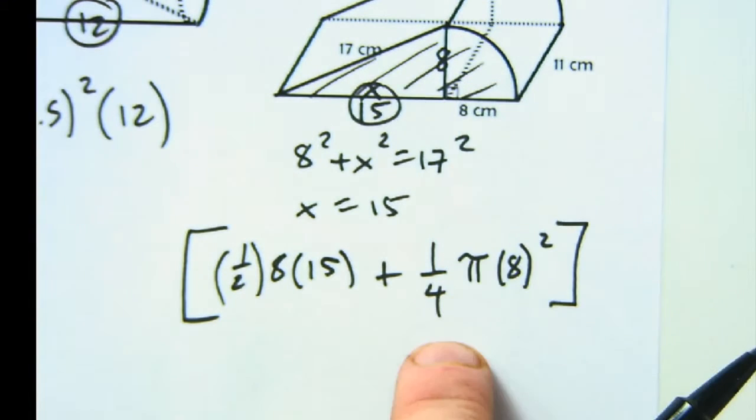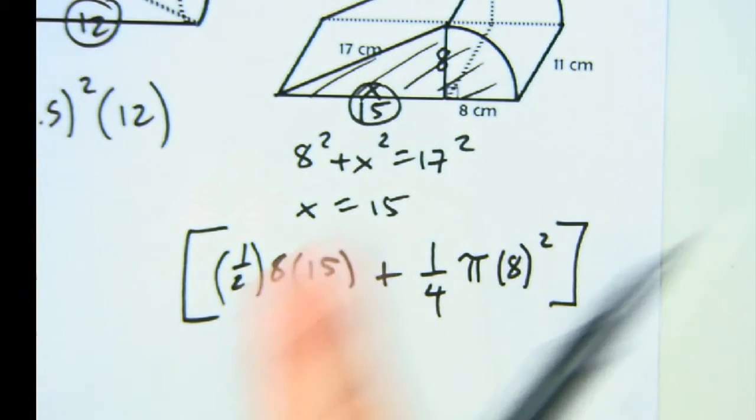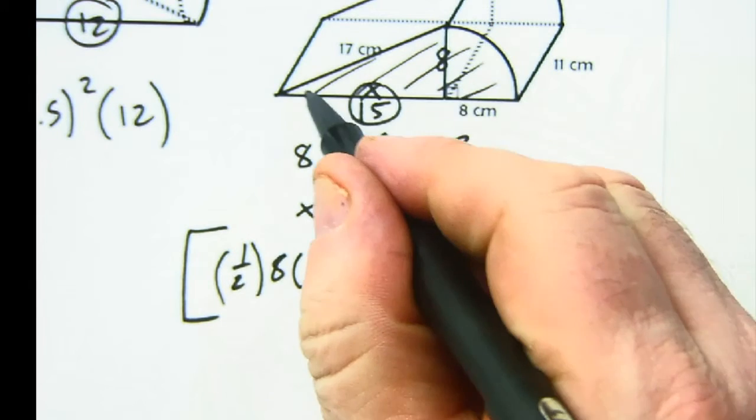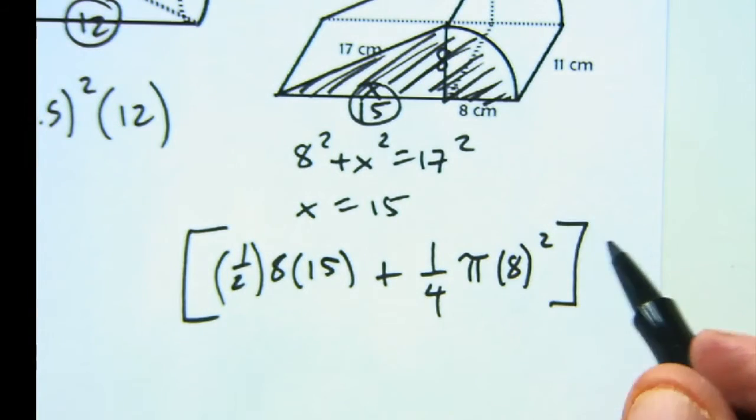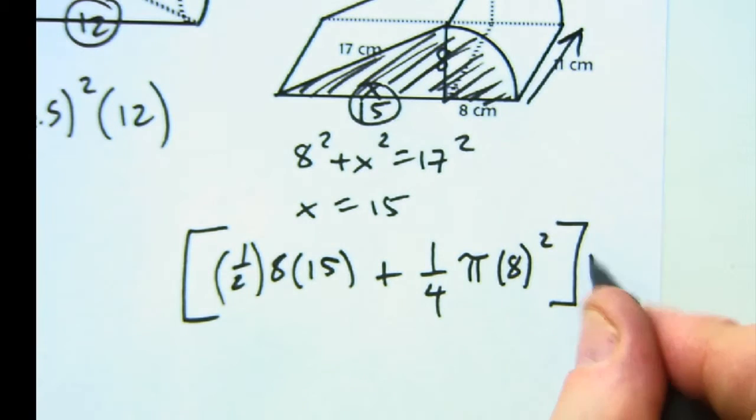Not a full, not a half, but a fourth of a circle, pi r squared. And then that whole thing, that funky cool looking half ice cream cone thing, it's going to get multiplied by 11.